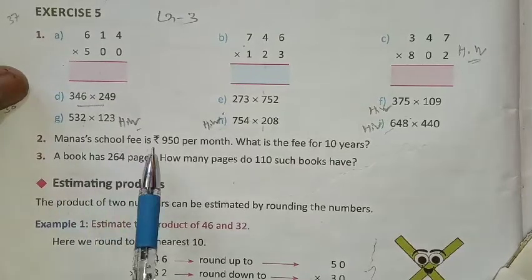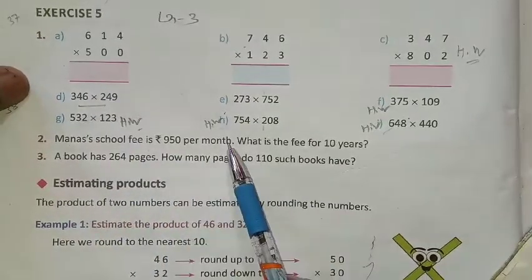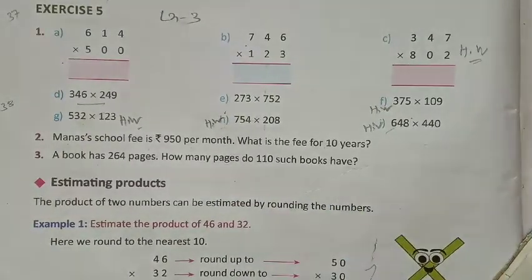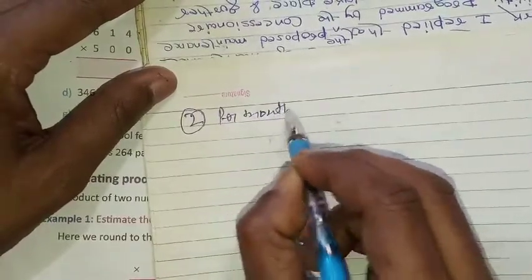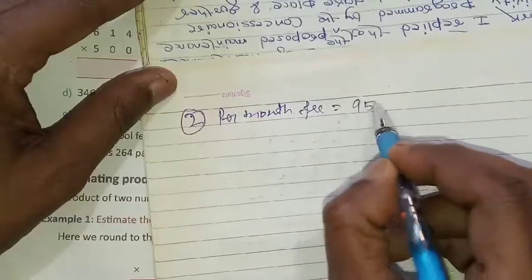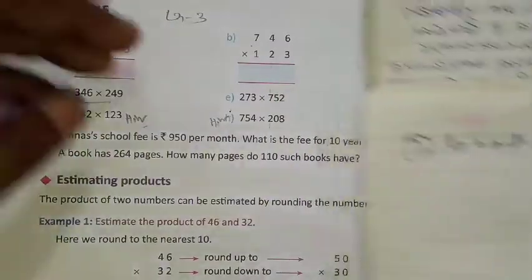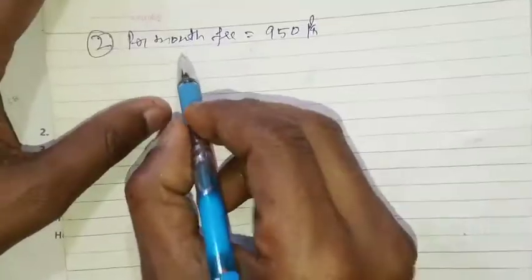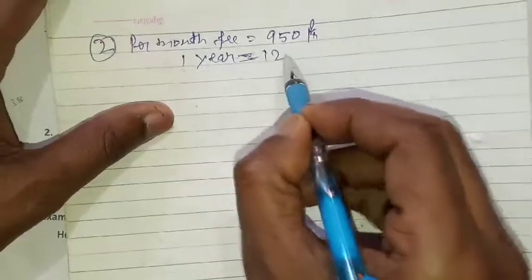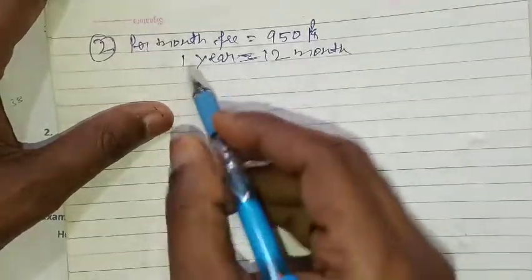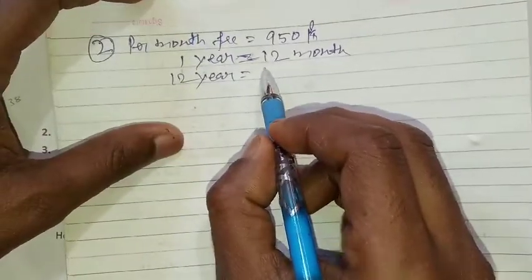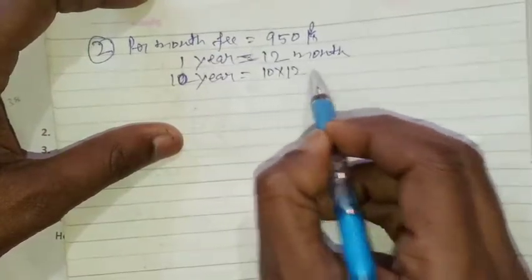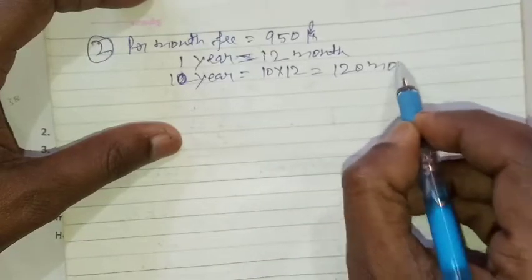Manan's school fee is 950 rupees per month. What is the fee for 10 years? That means what is the total fee for 10 years. So first we write per month, the fee total is 950 rupees. And after that, for 10 years. So 1 year, how many months are in 1 year? 12 months. Then how much in 10 years? 10 into 12 equals 120 months.